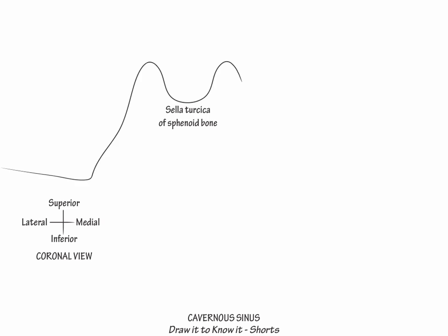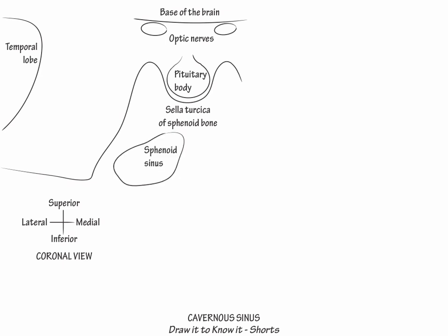The sella turcica of the sphenoid bone and the pituitary body, the base of the brain and underlying optic nerves, and the medial edge of the temporal lobe. Then draw one of the paired sphenoid sinuses within the sphenoid bone.